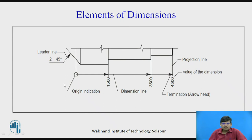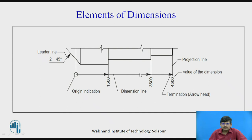Elements of dimensions: first, the origin of dimension — this is where you start the dimension for a particular component. The dimension is terminated with the help of an arrowhead. Then there are projection lines that you project from the object. This is the value of the dimension. These are some of the elements — also the dimension line — that are used during dimensioning.